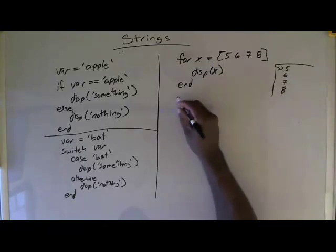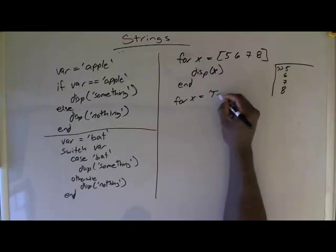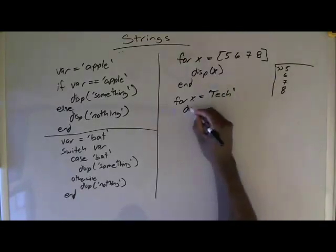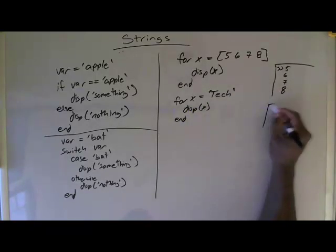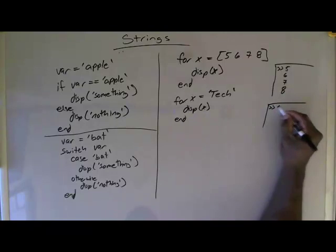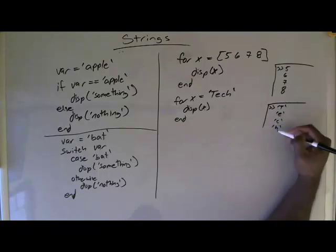Well, it is no different than if I said for x equals T, E, C, H, and then do display x, and then end. And I'm going to get, in the command window, T, E, C, H. Now, it may not show the quotes, but I'm just doing that here to show that these are characters.